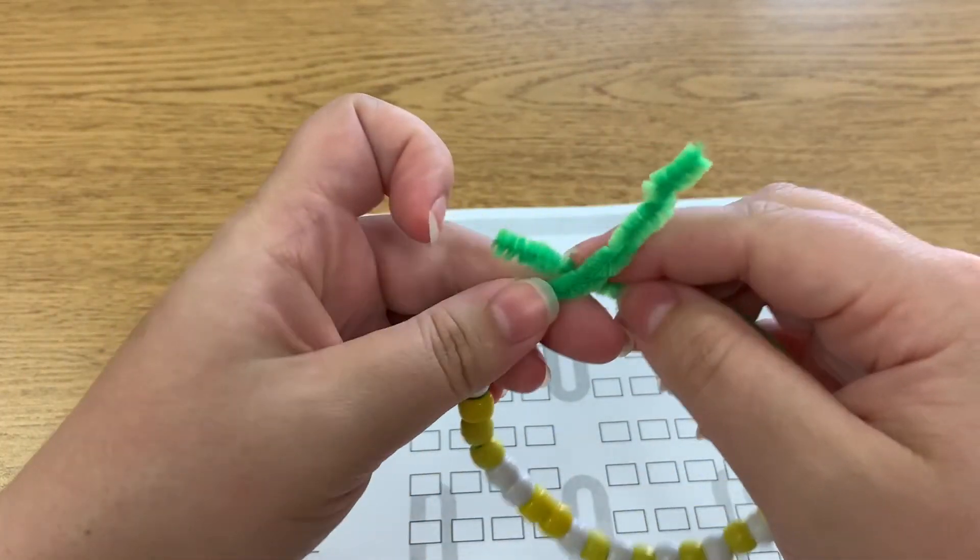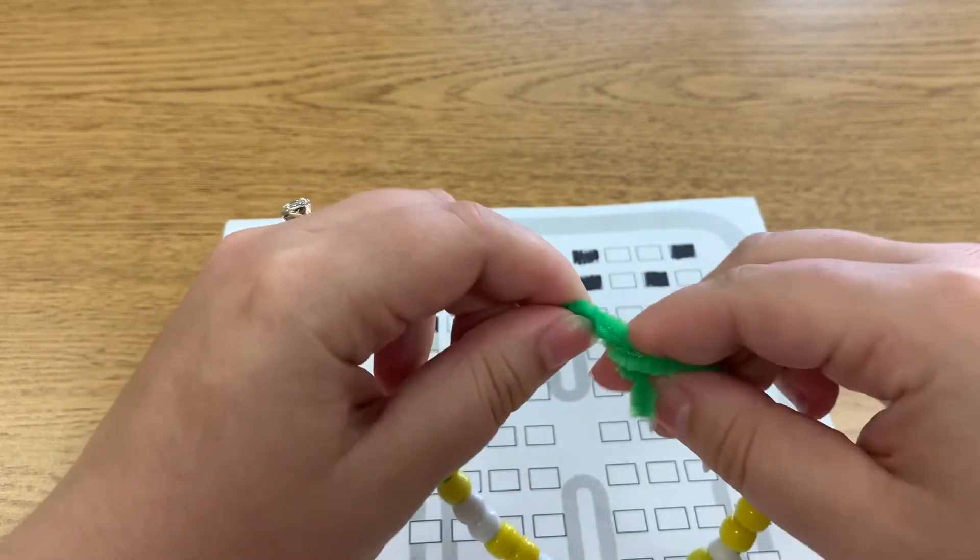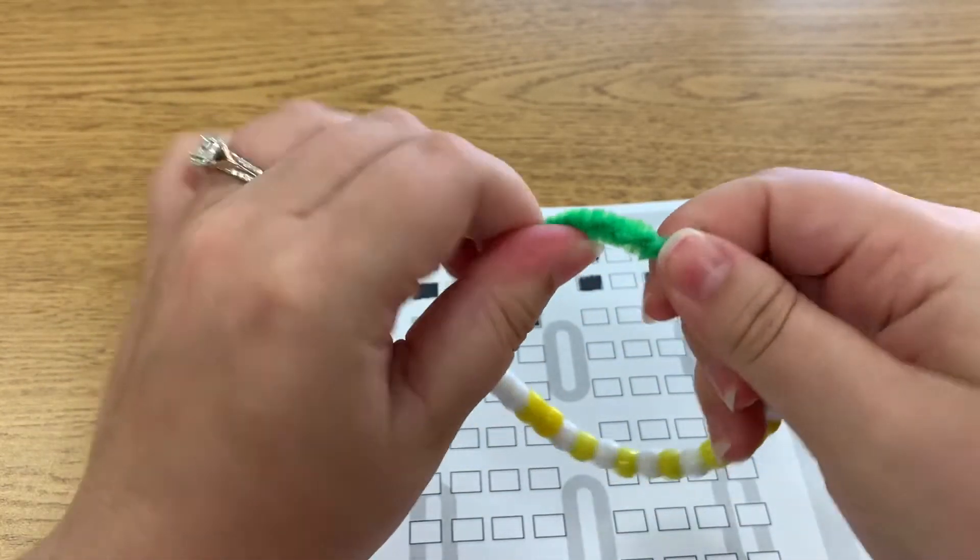Once you have all of your beads in place, if you are using a pipe cleaner, you can go ahead and twist the ends together. If you are using string, make sure you tie it securely.